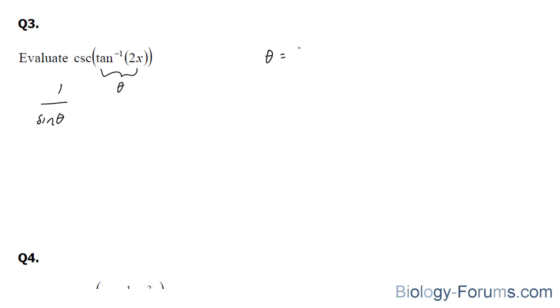So let's start off by setting this equal to theta. Theta is equal to the inverse tangent function 2x. Take tangent to both sides. We end up with tangent theta is equal to 2x. Now tangent relates opposite over adjacent. Now if we create a fraction here, this will represent our opposite, and this will represent our adjacent. Remember, SOHCAHTOA, OA.